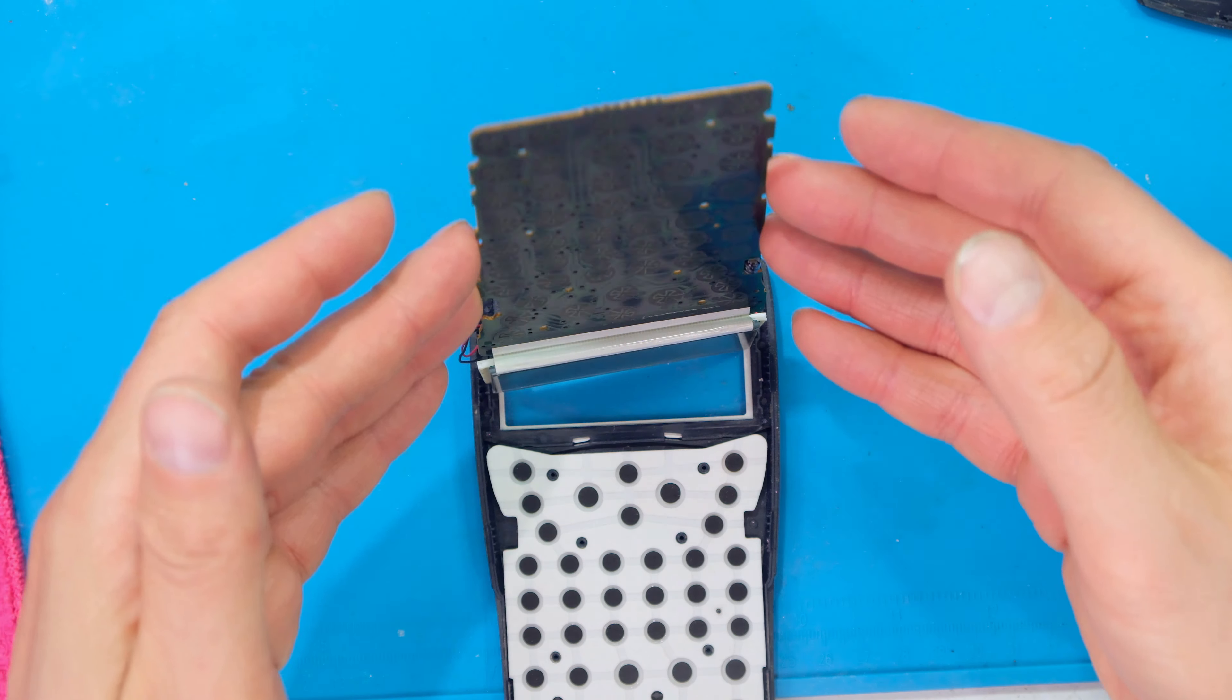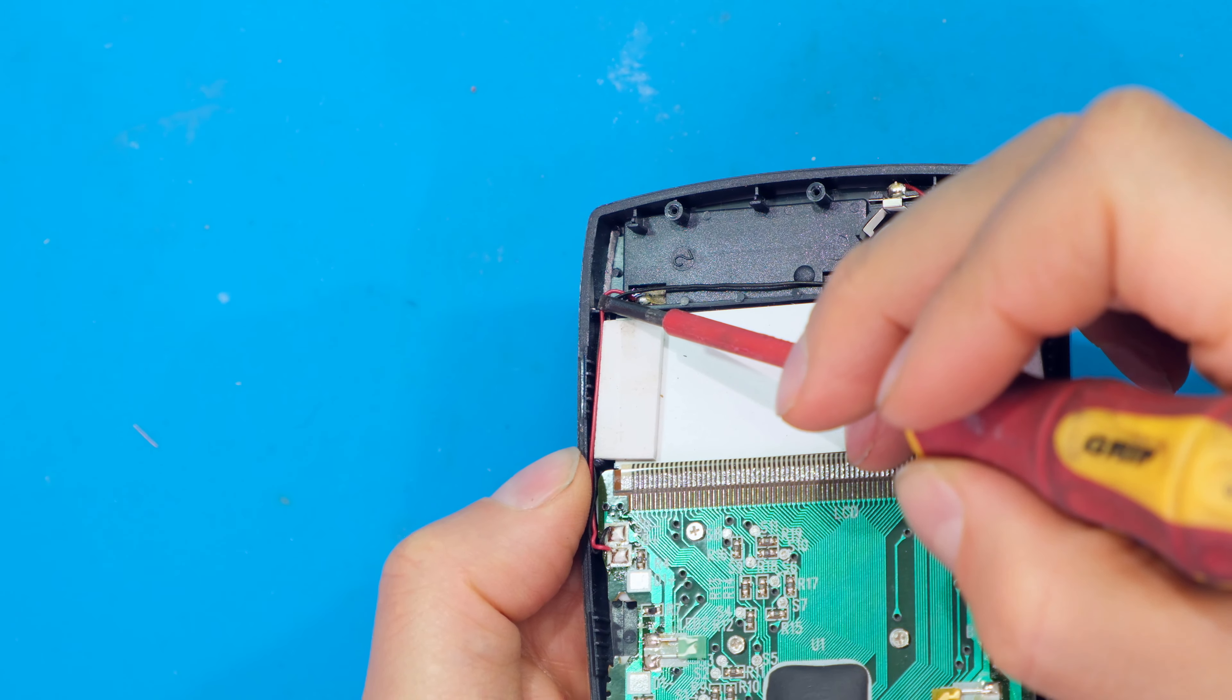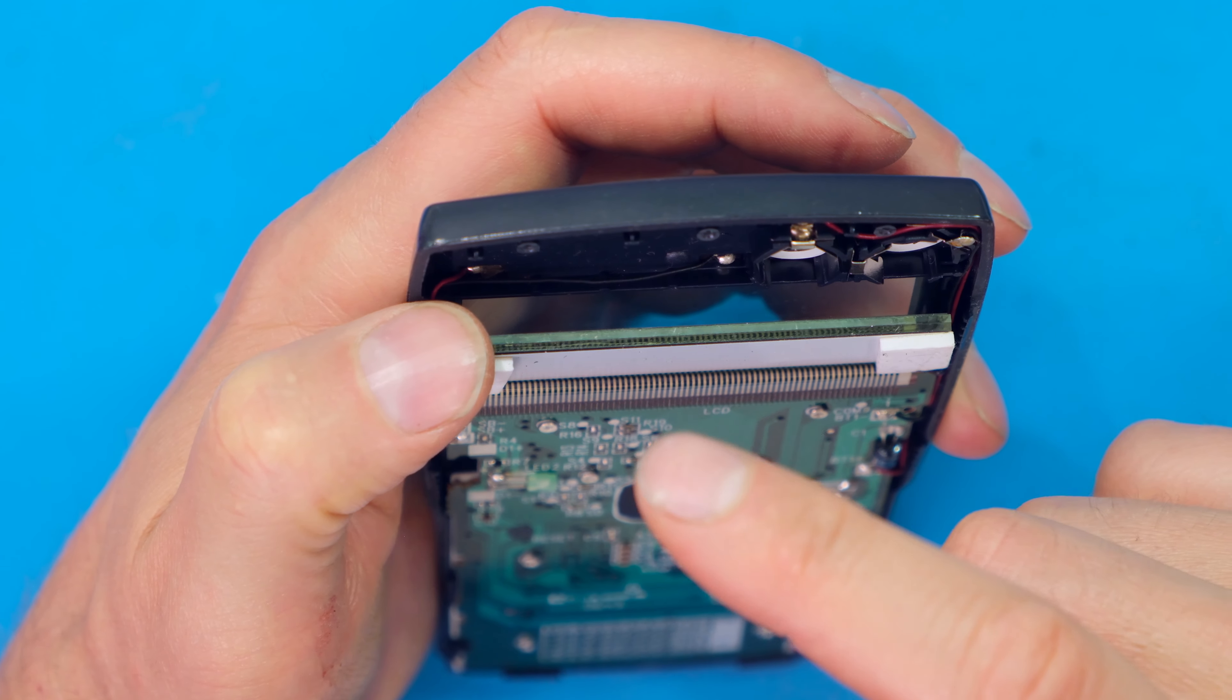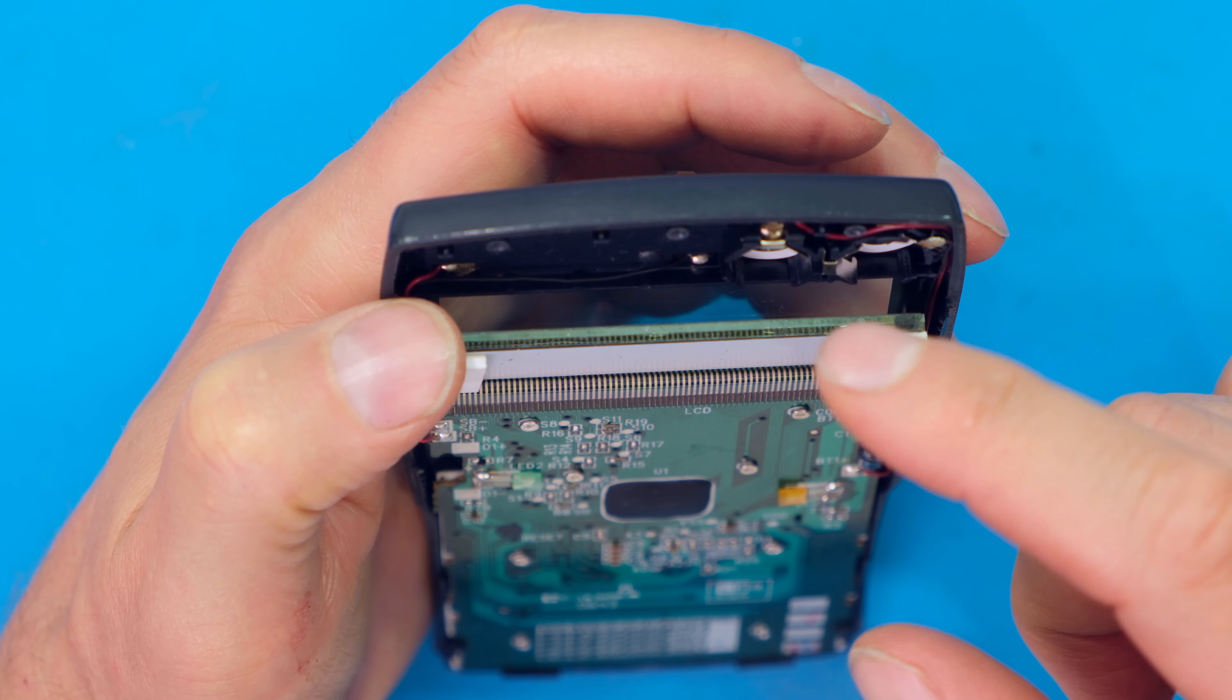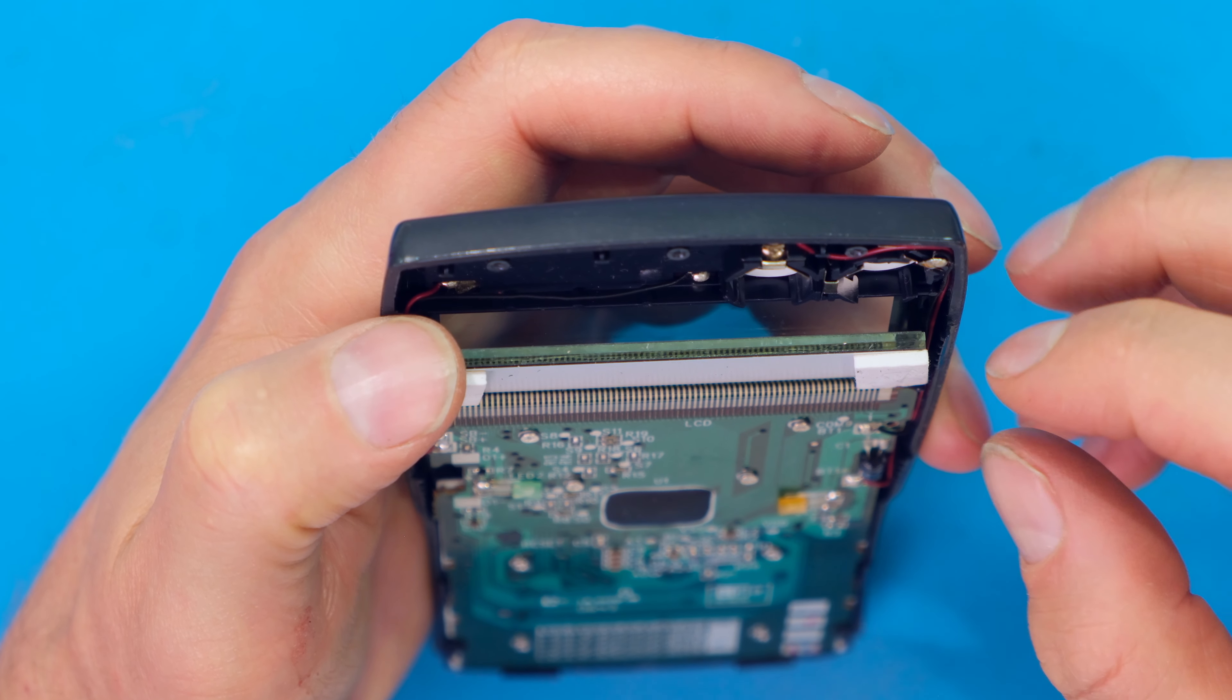Now just make sure that these wires are routed correctly - there's a little recess for the wire on the side there. Now just before closing this, if you can just blow inside there, sometimes little bits of dirt get stuck in there even though I had cleaned it. That will make sure there's no little specks underneath this plastic screen.